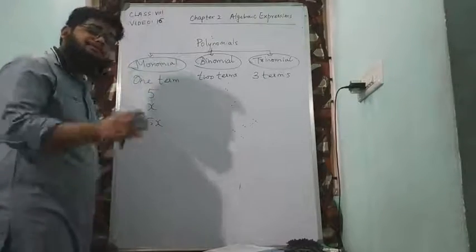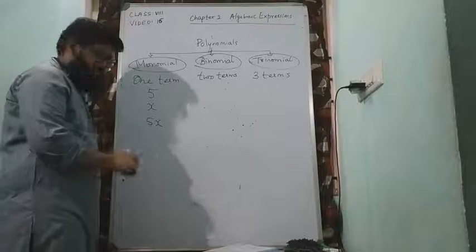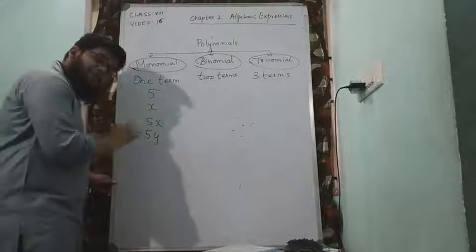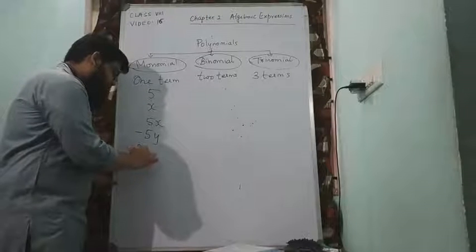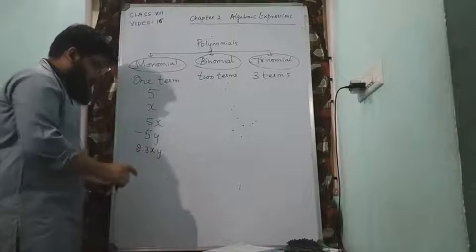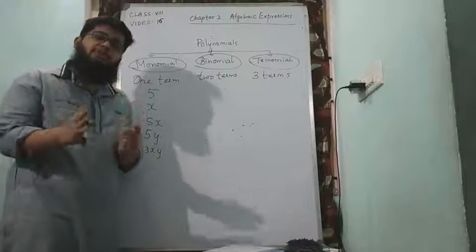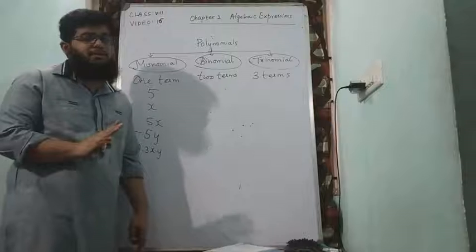I can also have negative integers like minus 5y. I can also have decimals like 2.3xy. Now you will say two terms or three terms only if there is a plus or minus sign between the terms.